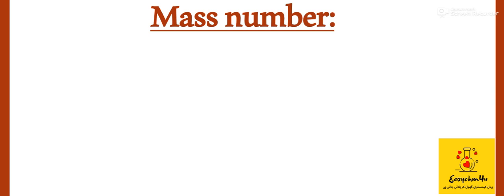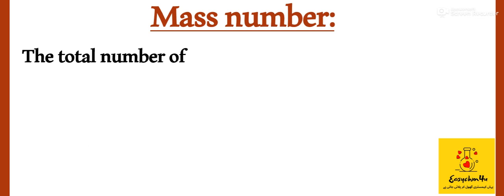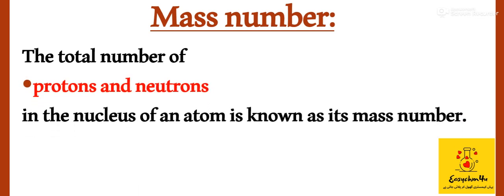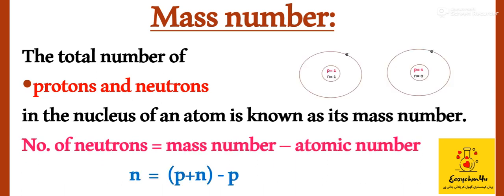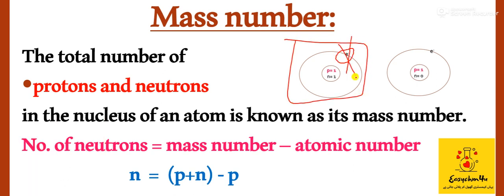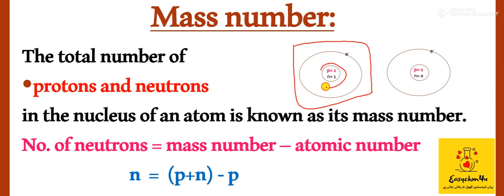Now, mass number and atomic mass. The total number of protons and neutrons in the nucleus of an atom is known as its mass number. In a total atom we have protons, neutrons, and electrons. When we consider the mass of the atom, we neglect the electron because the electron's mass is very small. So the mass of the atom equals protons plus neutrons in the nucleus, which we call the atomic mass and mass number.